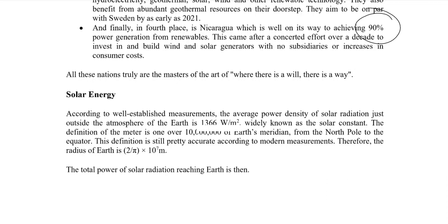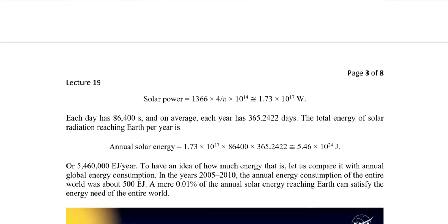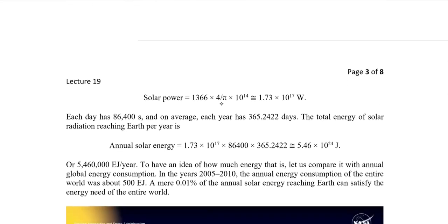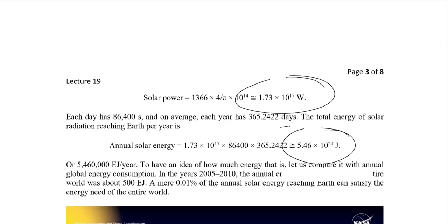The meter is defined as one ten-millionth of the Earth's meridian from the North Pole to the equator. Using that definition, the total power reaching Earth is 1366 multiplied by 4π × 10¹⁴, which comes to 1.7 × 10¹⁷ watts. If you multiply by the seconds in a day and each day in a year, the total power incident on the Earth during the year is approximately 5.46 × 10²⁴ joules per year.